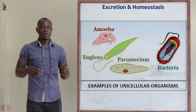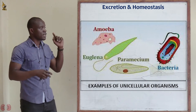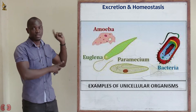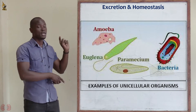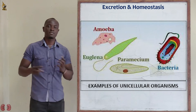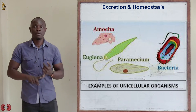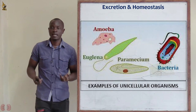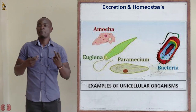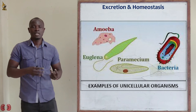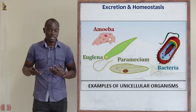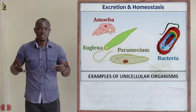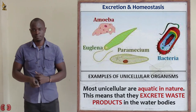In this subtopic, we are looking at excretion and homeostasis in unicellular organisms. These include the amoeba, bacteria, yeast cell, paramecium, and the different protozoa. These mainly comprise the unicellular organisms.